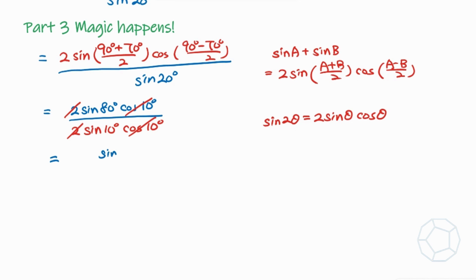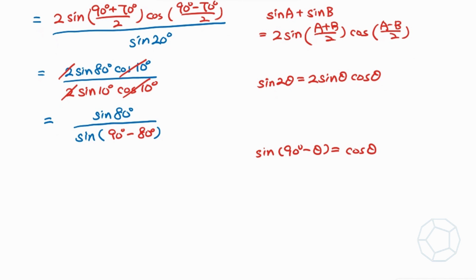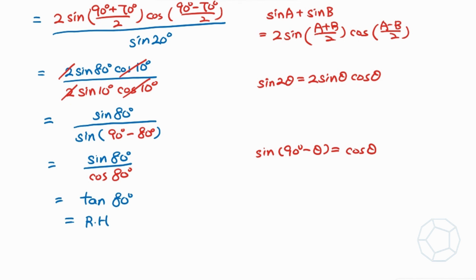We still have sine 80 degrees in the numerator. In the denominator, sine 10 degrees is expressed as sine(90 degrees minus 80 degrees). Using the identity sine(90 degrees minus theta) equals cosine theta, we get cosine 80 degrees. So the fraction is sine 80 degrees over cosine 80 degrees, which equals tangent 80 degrees — the right hand side. The identity is proved.